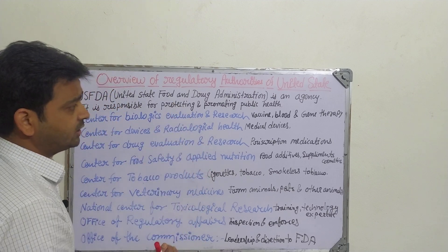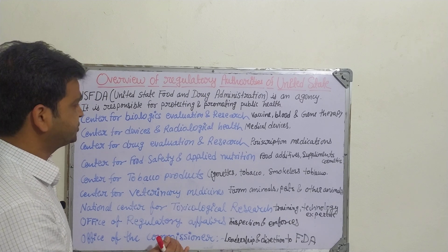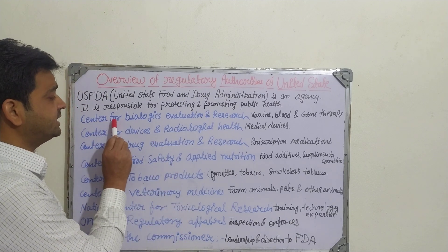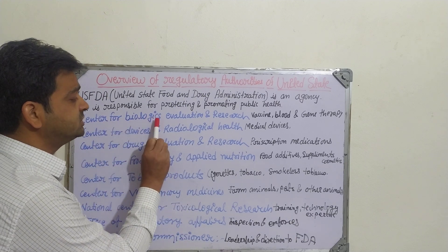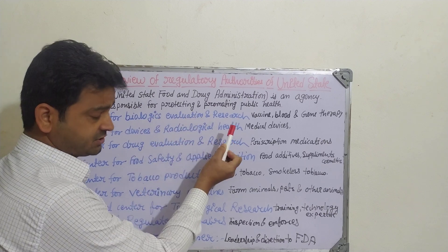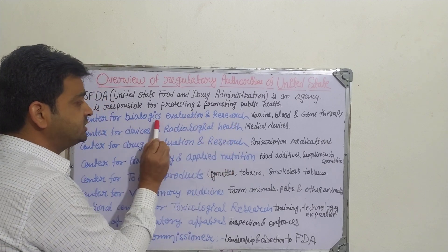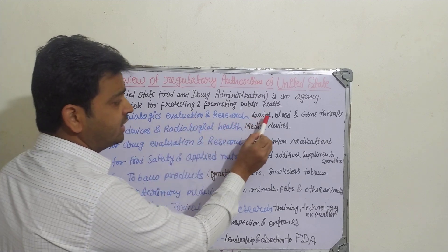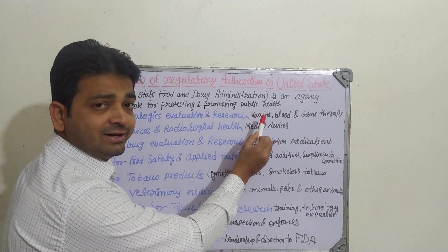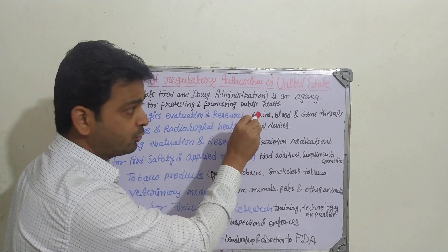Let us discuss about the organizational structure. The first one is the Center for Biologics Evaluation and Research. As the name indicates — biologics. So here, vaccines, where we are using living and dead microorganisms, meaning biological products.